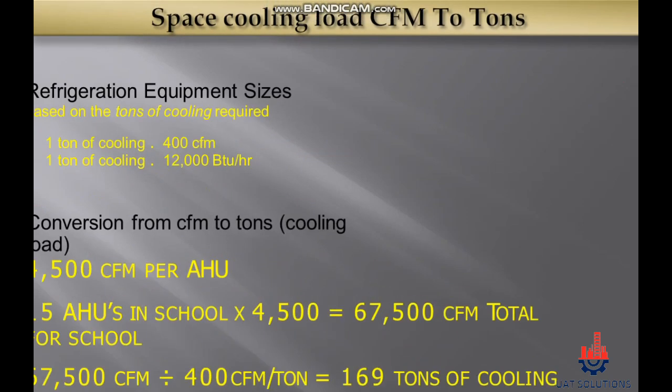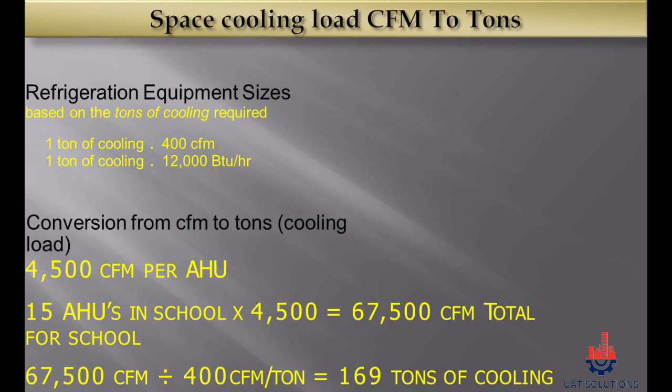The second step in conversion is to convert space cooling load CFM into tons of refrigeration, where 1 ton of cooling equals 400 CFM and 1 ton equals 12,000 BTU per hour. We are using 15 AHUs in the school building, each supplying 4,500 CFM, so 15 AHUs will supply 67,500 CFM as total space cooling load. Dividing 67,500 by 400, we need 169 tons of refrigeration for space cooling only.